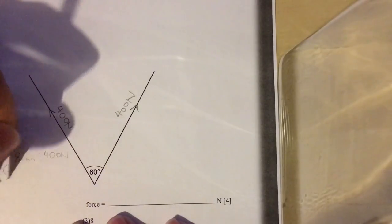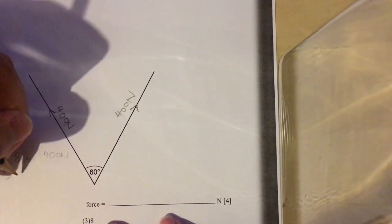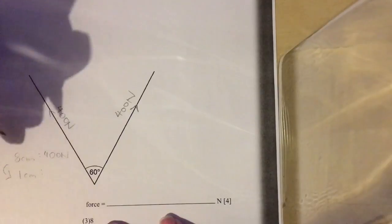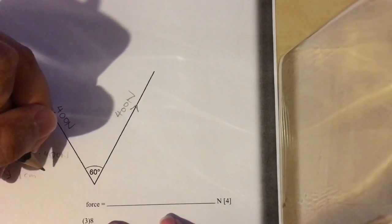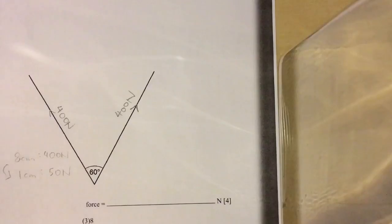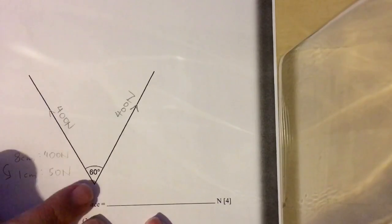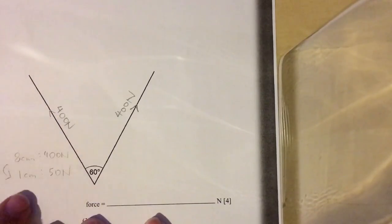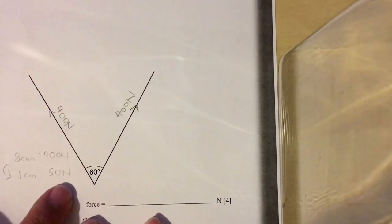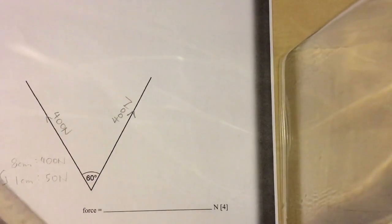Therefore, my final scale ratio will be 1 cm is to 400 divided by 8, which gets me 50 N. Given that this one is 400 N, I will need to draw the length of the line that represents 400 N. Since 1 cm represents 50 N, 8 cm will represent 400 N. Therefore, I need to draw a line that is 8 cm long.